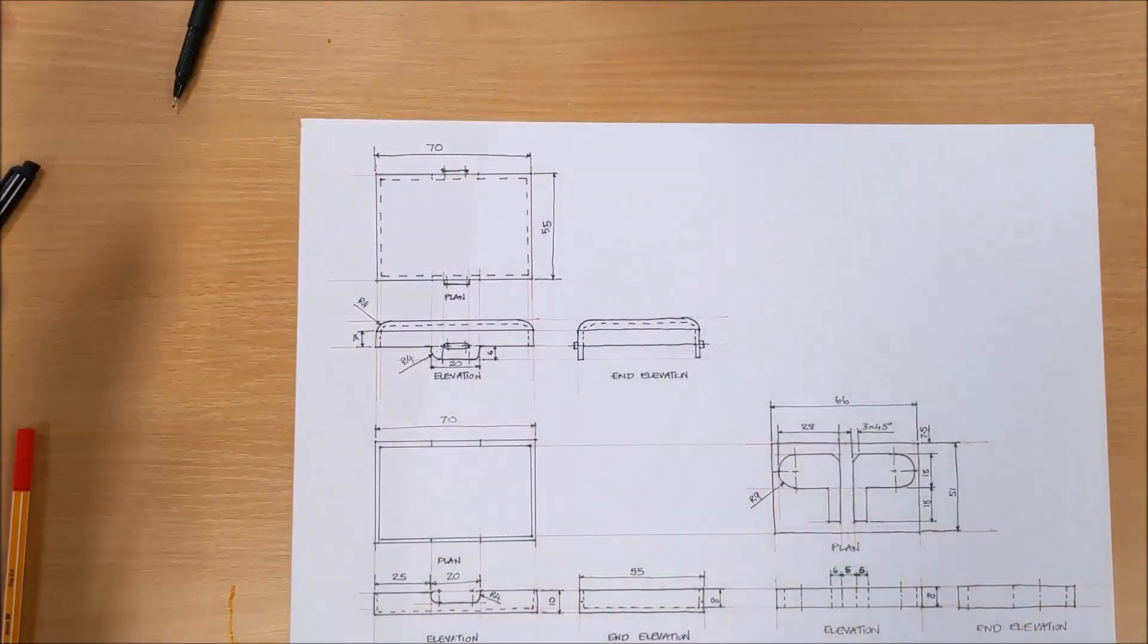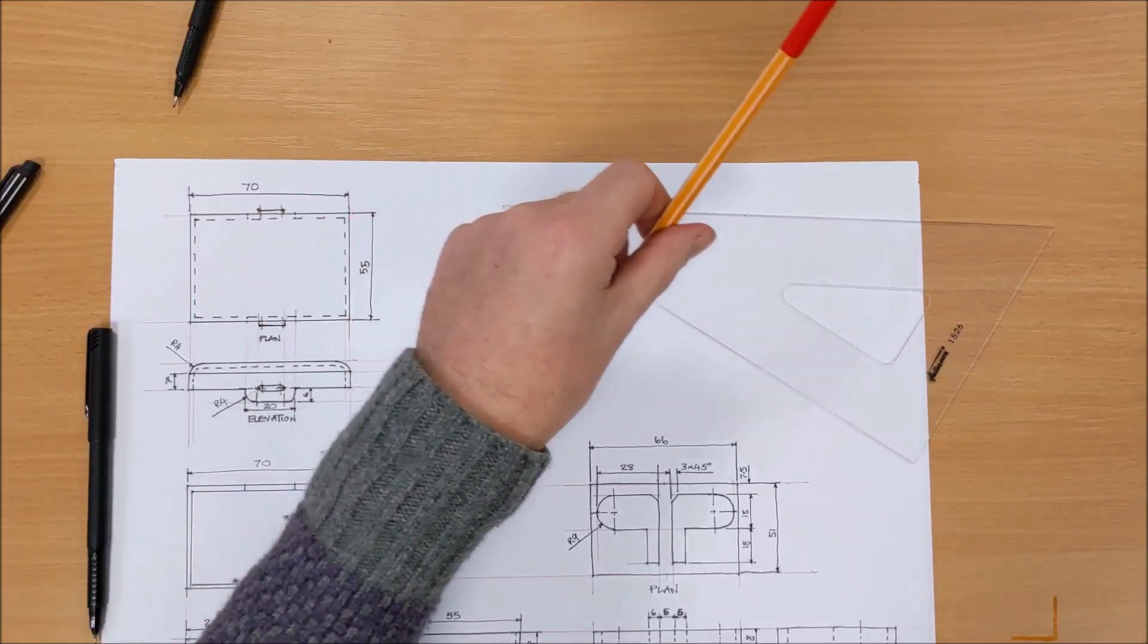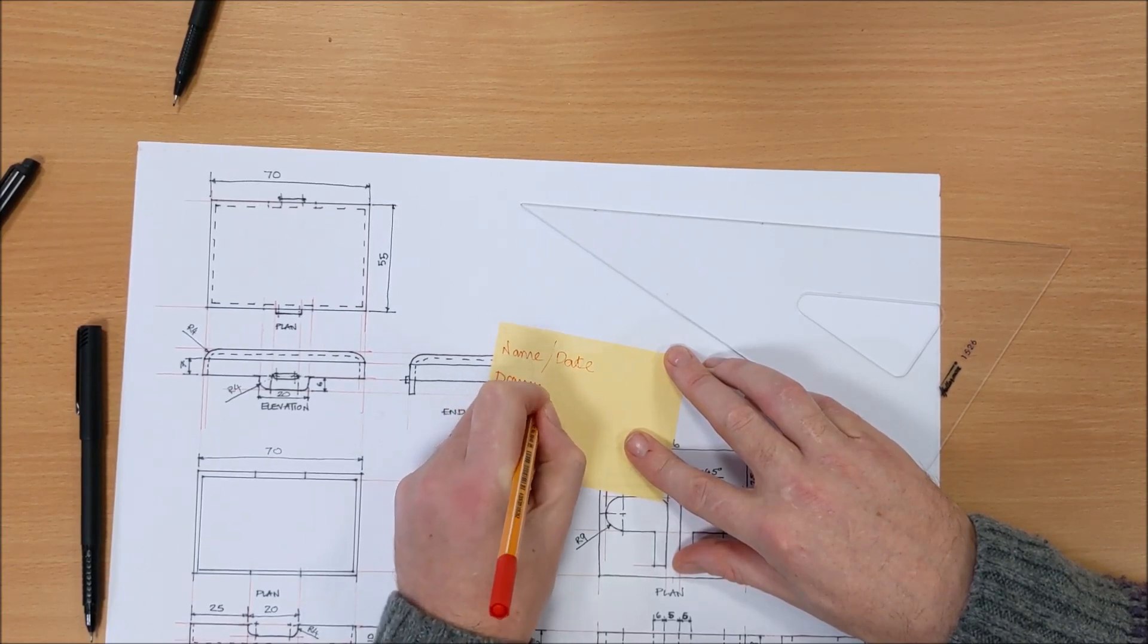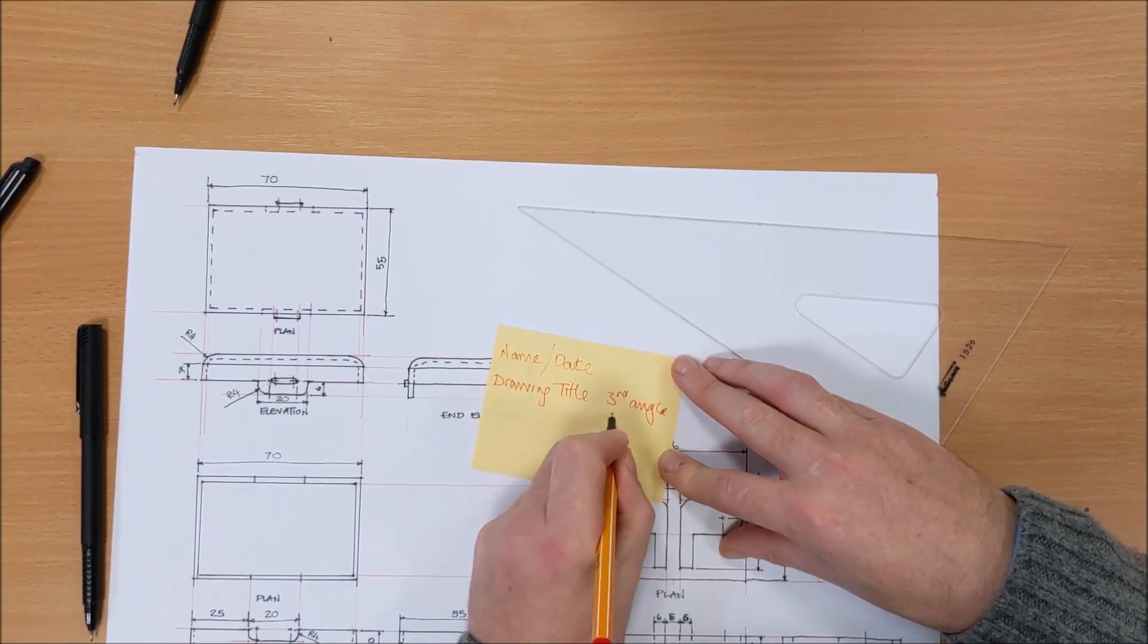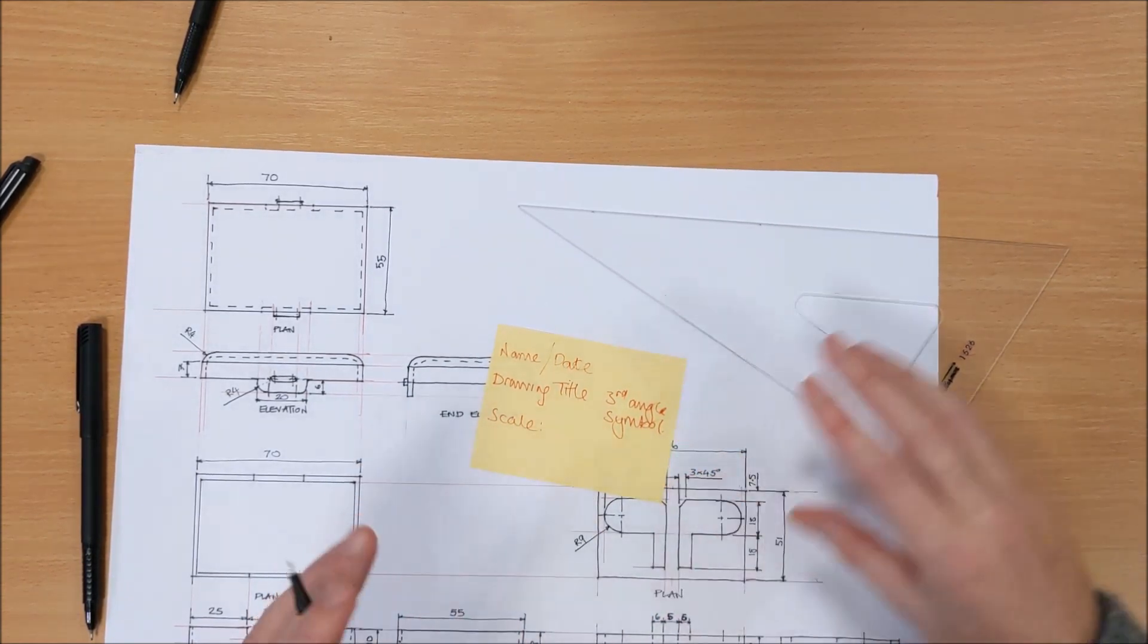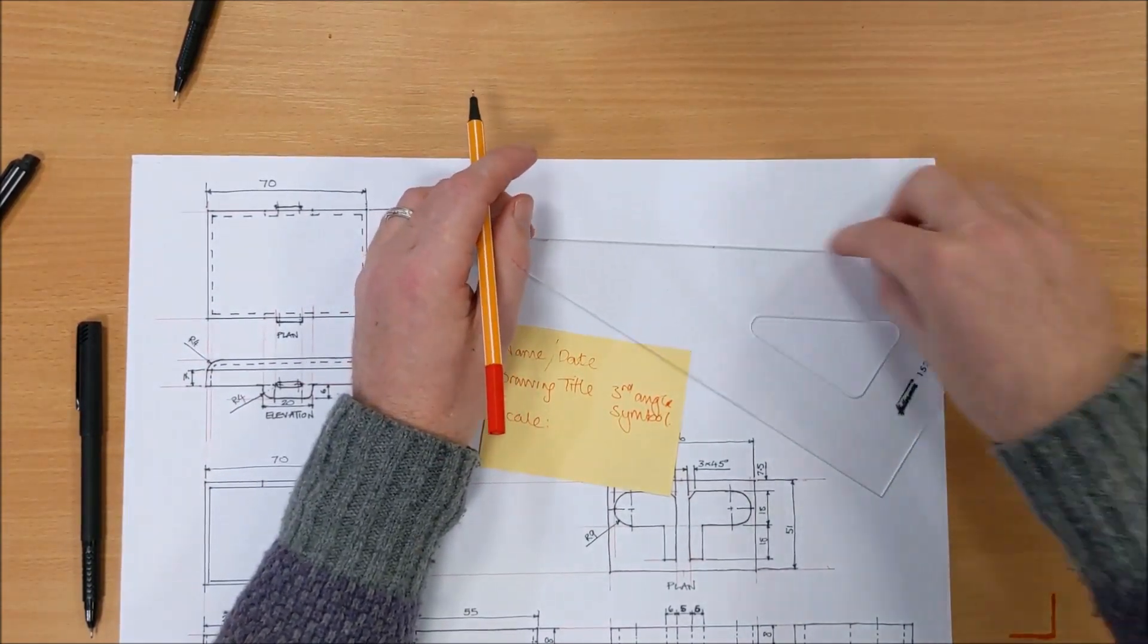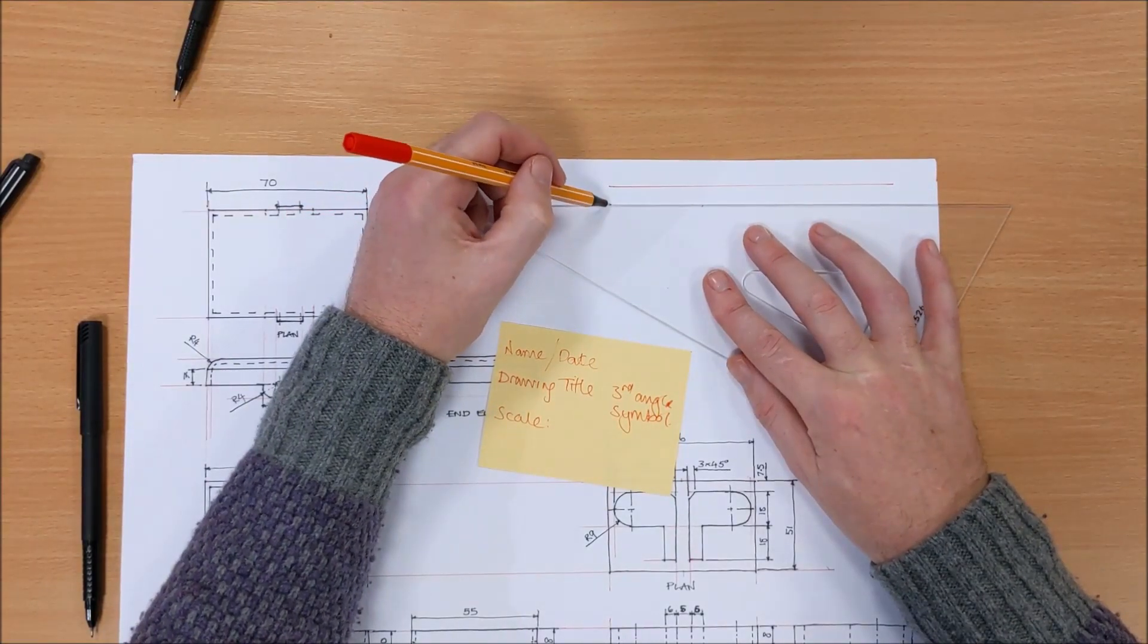Next is our title block, so we want to add the title block in, and what do we need? For our title block we need, make a wee list: name, date, drawing title, third angle symbol, scale. Even though there is no scale, it's worth mentioning that, because somebody might come up and start measuring it, thinking that there's going to be a scale. So, I'm going to, you could use the very outside edge, but I'm just going to draw a little box, and with a number of lines, all like so apart.